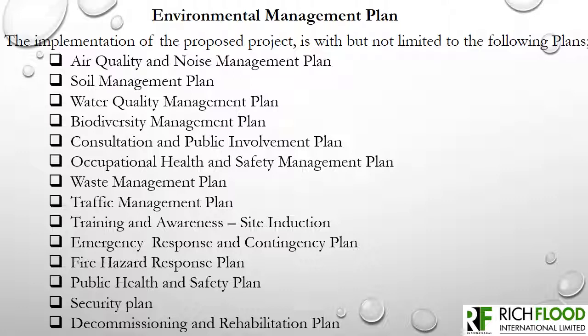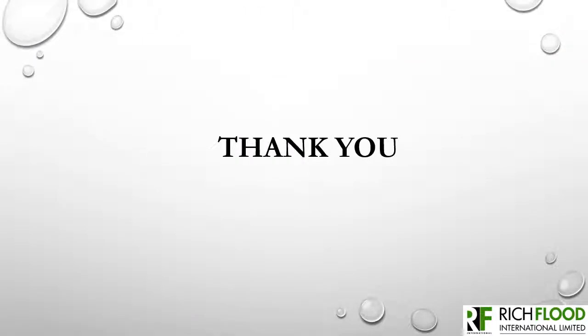Conclusively, the impact assessment pathway, explained step by step, covers identification of impacts, characterization of impacts, significance rating, mitigation measures, and the environmental management plan. All these elements together ensure an effective Environmental Management System in a project. Thank you.